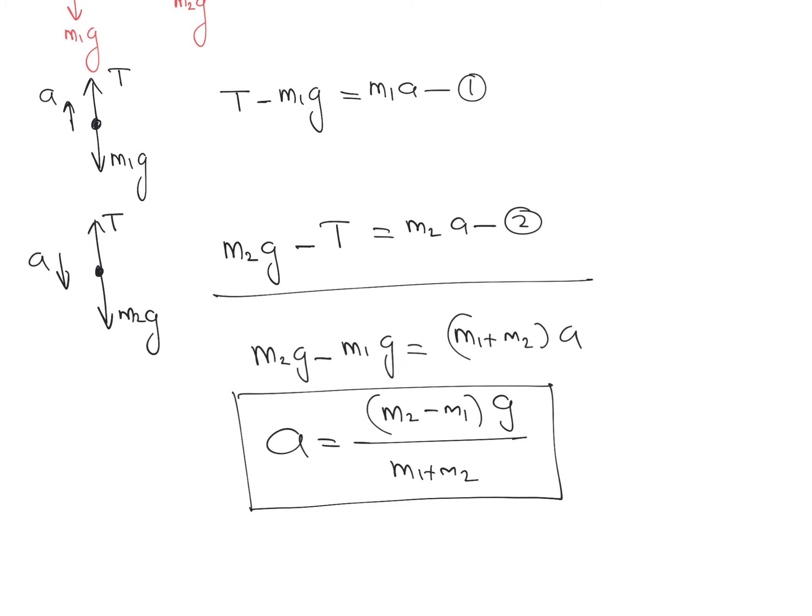If you want to find the value of tension, substitute the value of acceleration into either equation one or equation two to find the tension T. For any question related to a string or pulley system, we use this concept to find the acceleration.